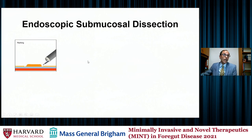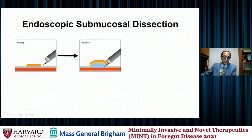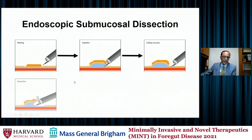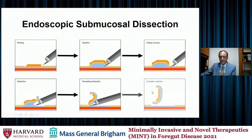Sometimes lesions are too big to get a good en-bloc resection, and in this situation we can consider endoscopic submucosal dissection (ESD). First, we mark the lesion — placing marks around it — inject a bleb of a lifting agent, and then start dissecting out the lesion from above, continuing the dissection. Finally, as we proceed through, we're able to get an en-bloc resection with clear margins.